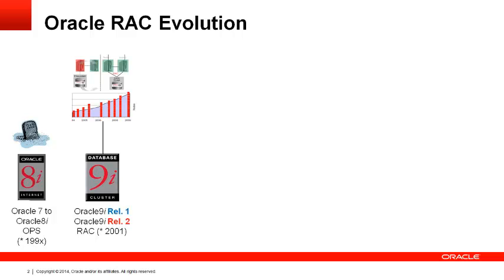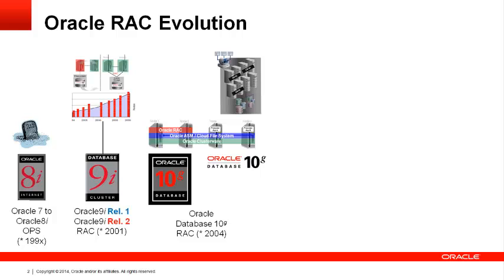In Oracle 10g, Oracle made some great enhancements to Oracle RAC. To address the complexity, Oracle began providing its own clusterware — Oracle Clusterware — and storage manager, Oracle Automatic Storage Management, or ASM. Now Oracle provided the entire stack for the RAC deployment, putting an end to the complexity of integrating and supporting third party components into the cluster. In addition, ASM provided many features that simplified managing storage, going well beyond the features provided by third parties.